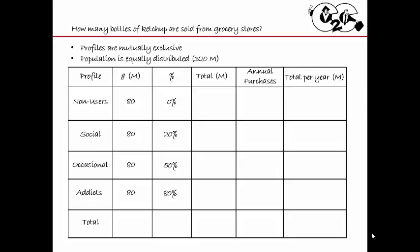You might wonder why addicts are 80% and not 100%. Maybe they're not always going to grocery stores — maybe they get it from restaurants or save packets for whatever reason. That's just something you want to explain. So the totals in millions: non-users give me zero, social gives me 16, occasional gives me 40 million, and addicts gives me 64. That's about 120 million people going to grocery stores to buy ketchup.